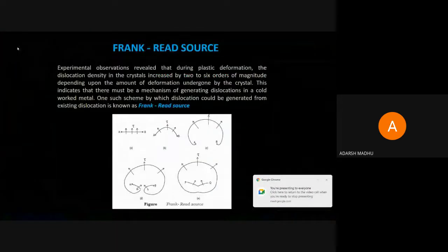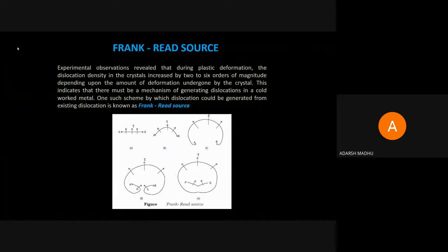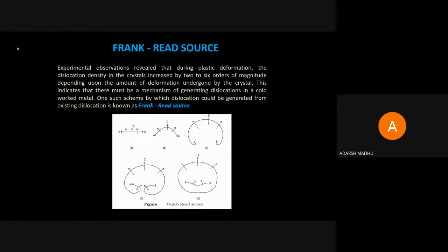So for the Frank-Read source, there are suitable sources which are used to generate dislocations. These are called Frank-Read sources. So what is the definition and what is the scheme and the presentation of the Frank-Read source?